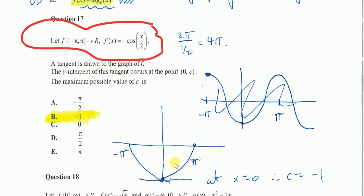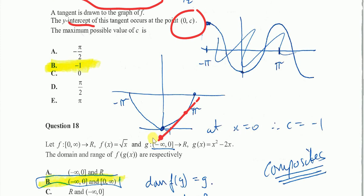A tangent's drawn. So if I draw a tangent here, I'm looking for the y-intercept to be 0c. So this is going to be c down here. The maximum possible value of c.